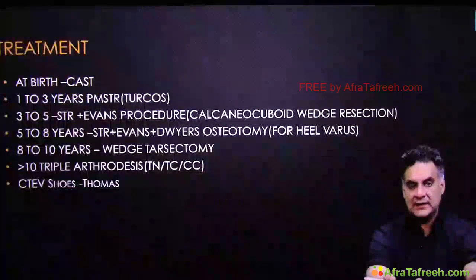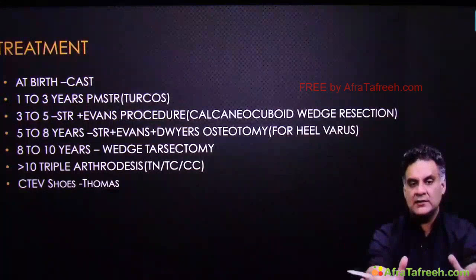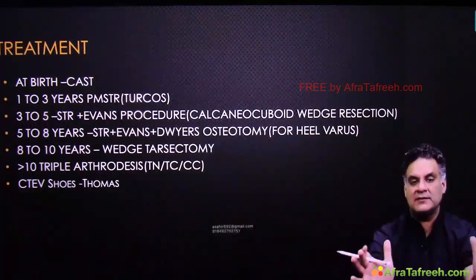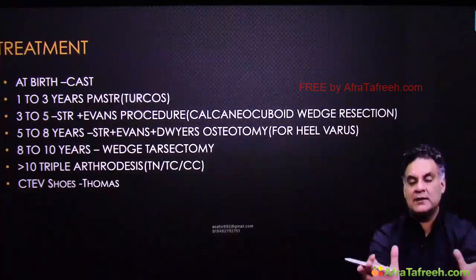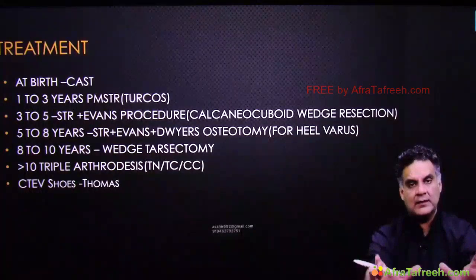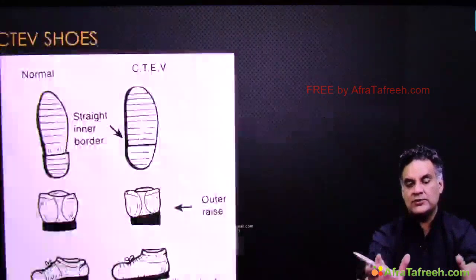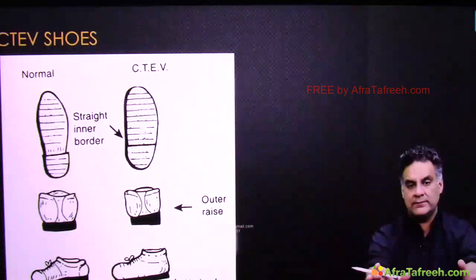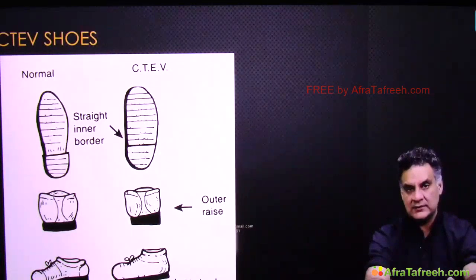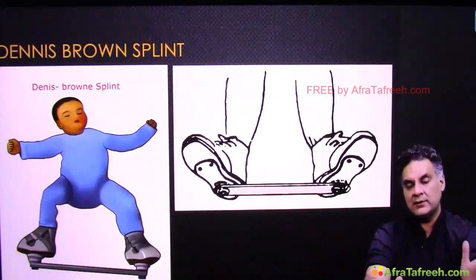To summarize CTEV treatment by age: at birth, cast; one to three years, soft tissue release; three to five, soft tissue plus Evans procedure; five to eight, soft tissue plus Evans plus heel correction; eight to ten, multiple tarsal bones wedge tarsectomy; beyond ten, triple arthrodesis. After correction, give CTEV shoes — straight medial border, outer shoe raise, no heel. When the child is not walking, apply the Dennis Brown splint.